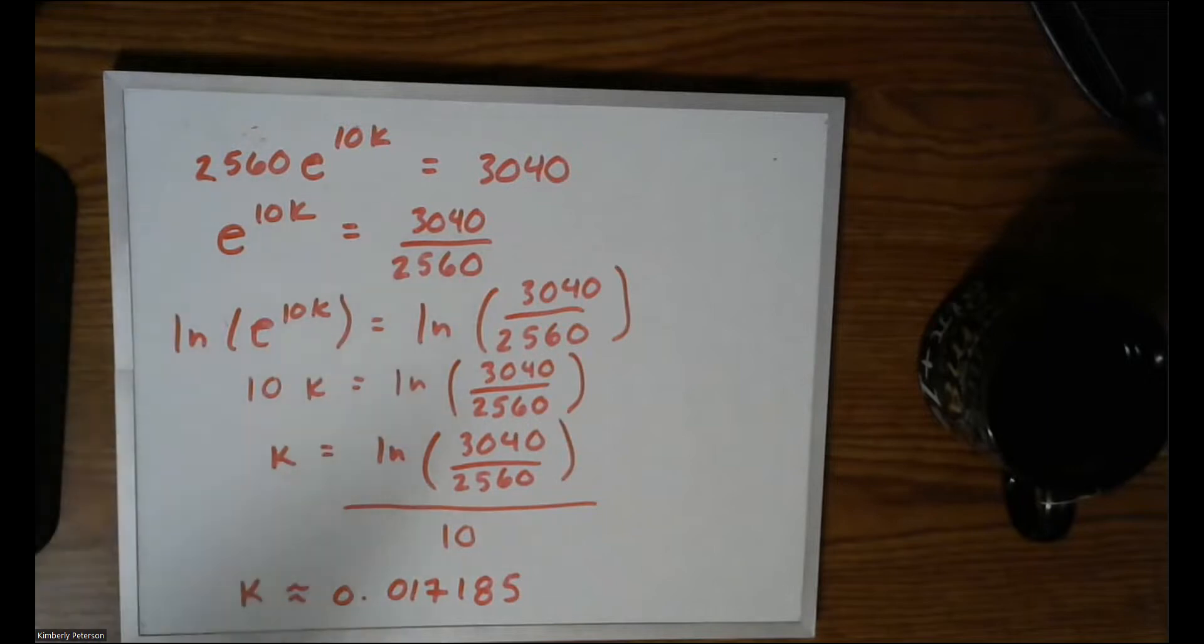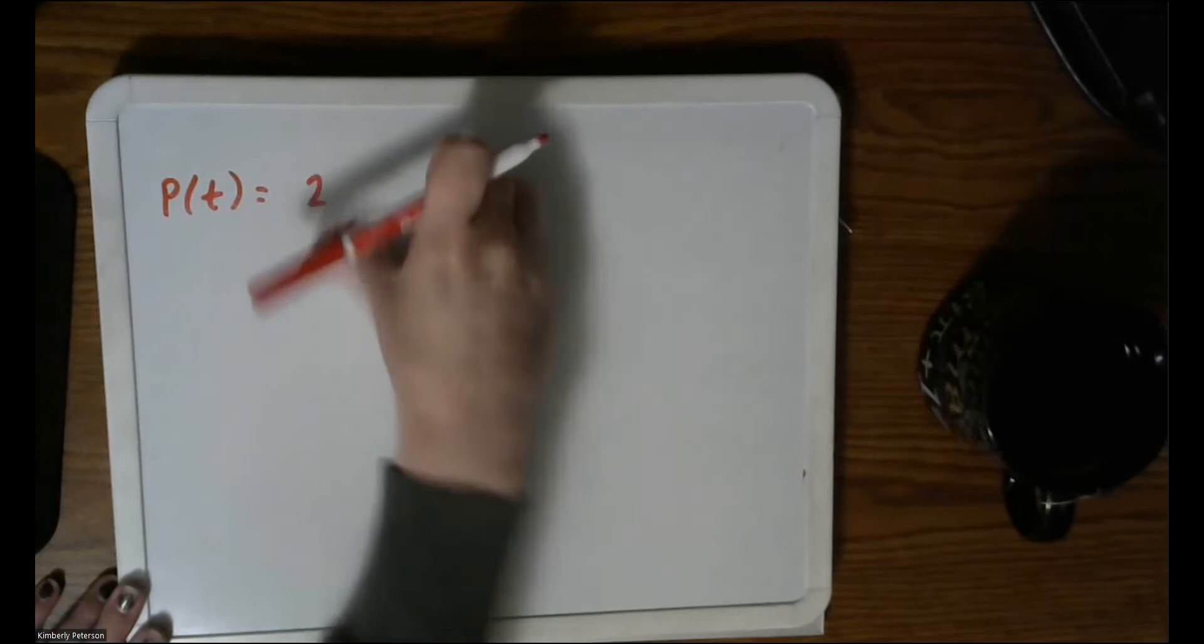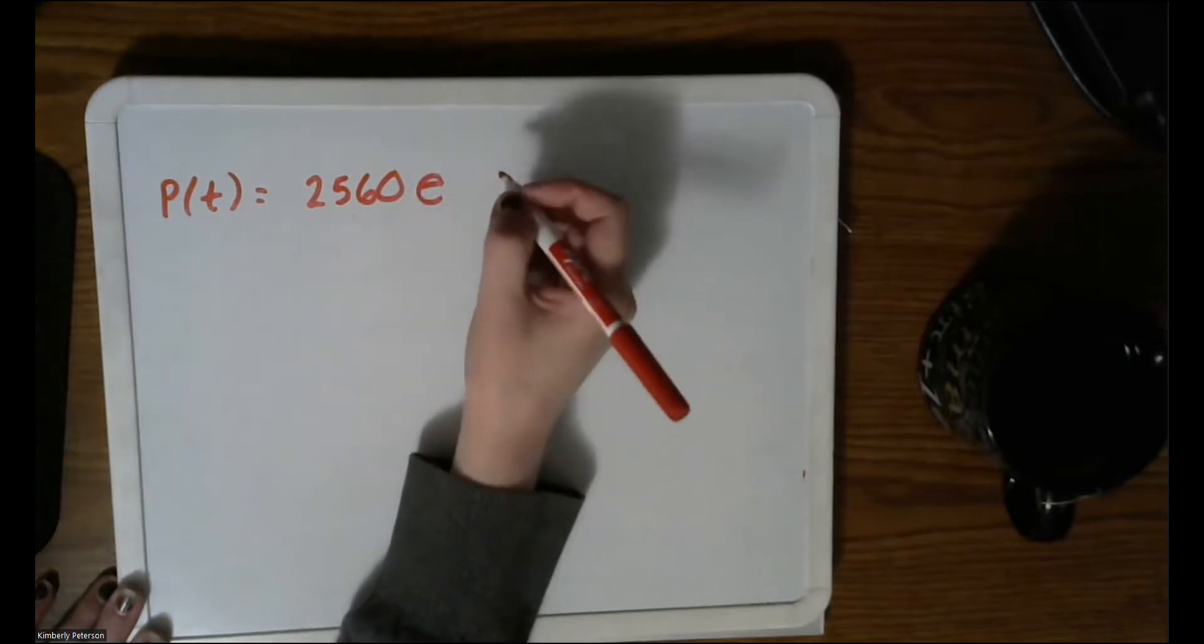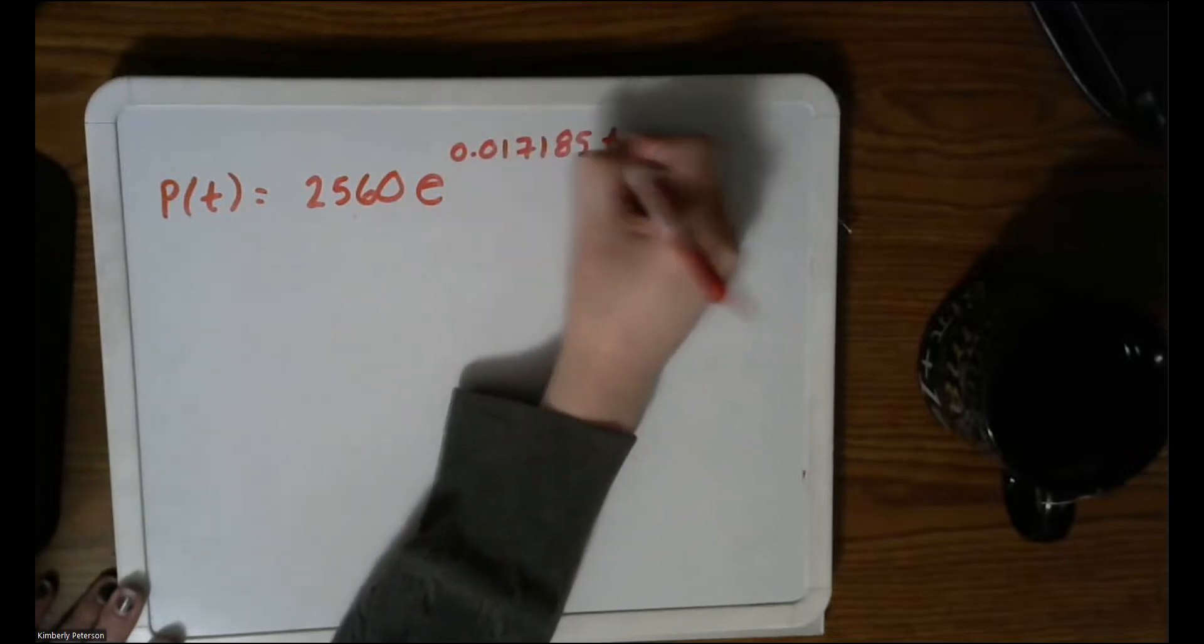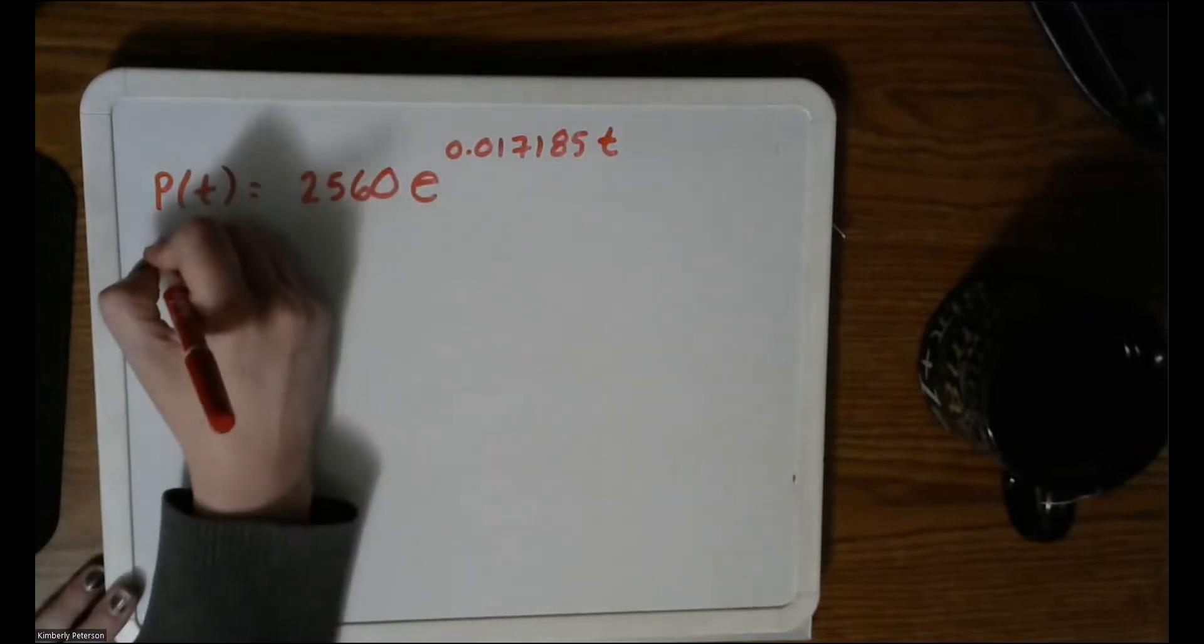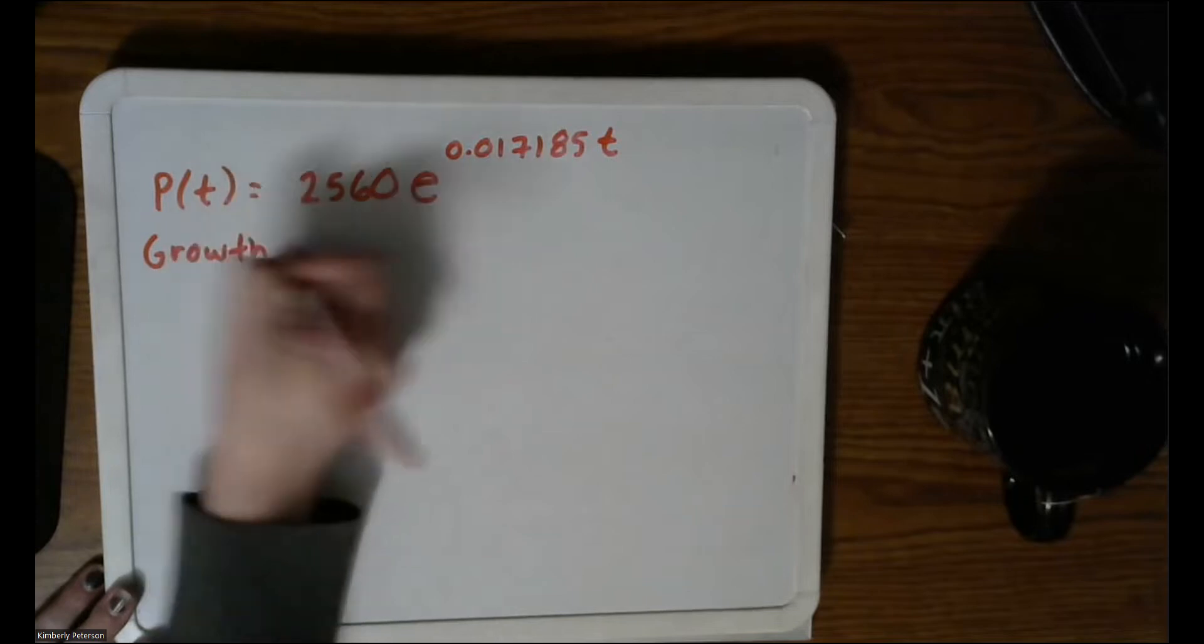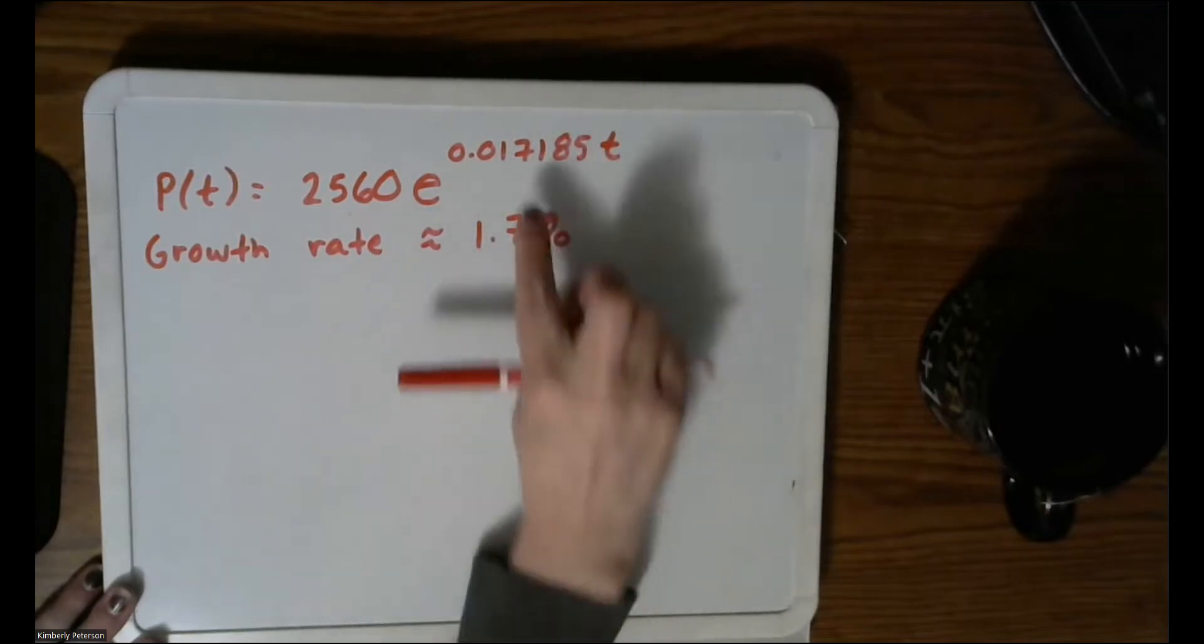Now keep in mind, I still have not yet predicted my population. All I have done is solved for k. So if we go back to our original equation, I can now write it down with all of the parameters. So what I have now for the equation is p(t) = 2560·e^(0.017185t). So let's make a couple observations here. We now know our growth rate. So our population is growing at a rate of approximately 1.7%.